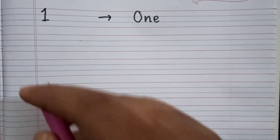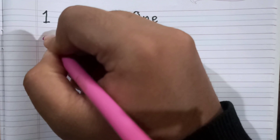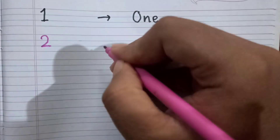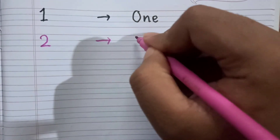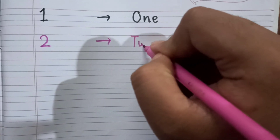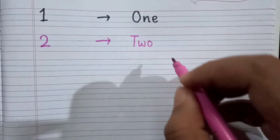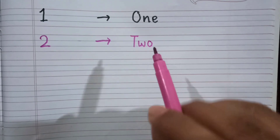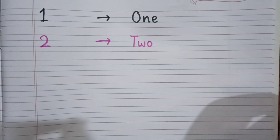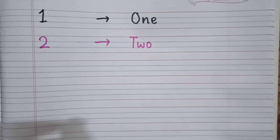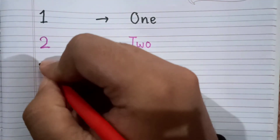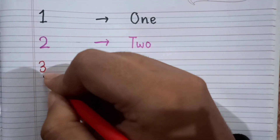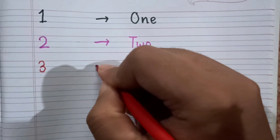After one, the next number is two. Now I'm writing two. This is two, and the spelling of two is T-W-O. Two. After two, the next number is three. Now I'm writing three. This is three, and the spelling of three is T-H-R-E-E.